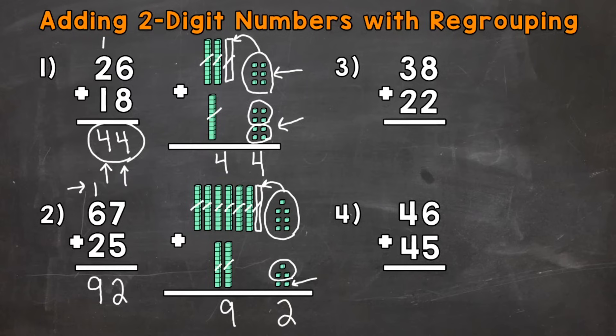We have 1 ten, which has a value of 10, plus 6 tens, which has a value of 60, plus 2 tens, which has a value of 20. So 10 plus 60 plus 20 is 90. And that 9 has a value of 90 like we talked about because it's in the tens place.